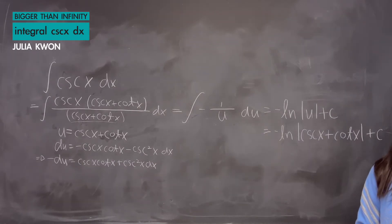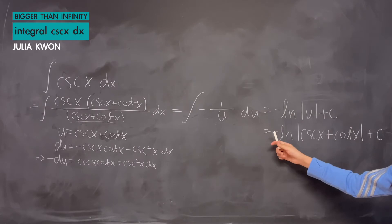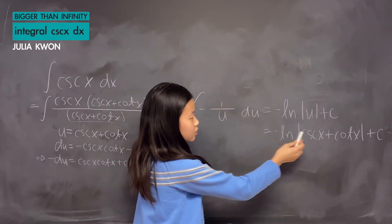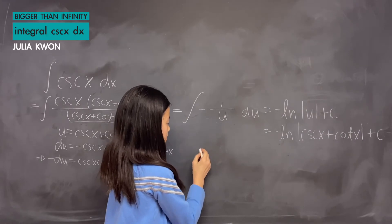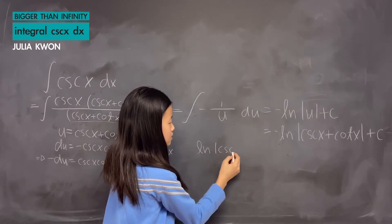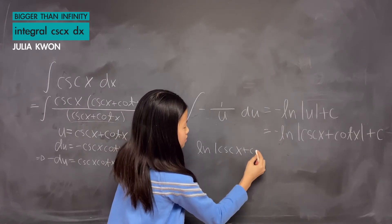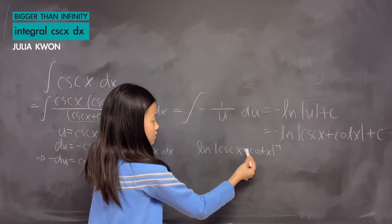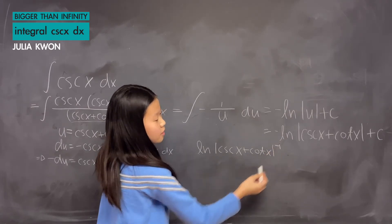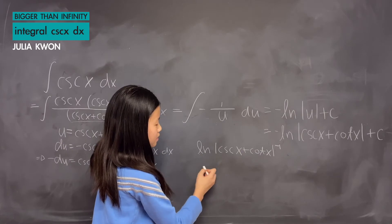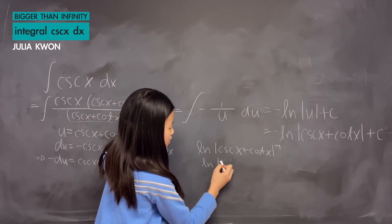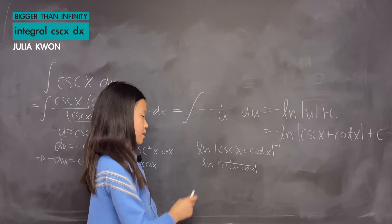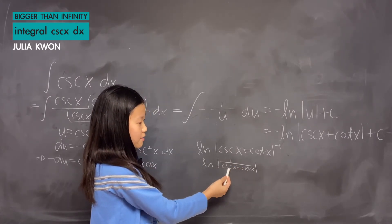You can leave your answer as this, but we can simplify a bit more by working with the ln. The negative can go to the top as an exponent, so we focus on that part. Cosecant x plus cotangent x is raised to the power of negative one, which gives us ln absolute value of 1 over (cosecant x plus cotangent x). Let's ignore the ln for now and simplify what's inside the absolute value.